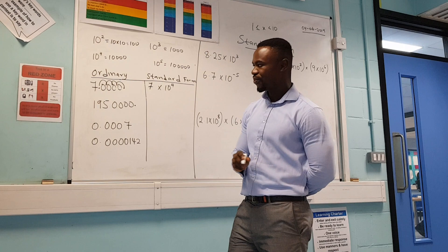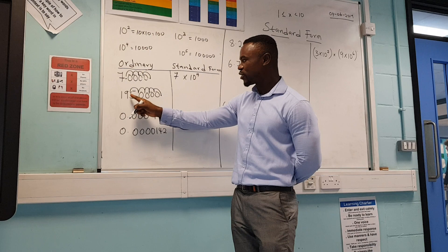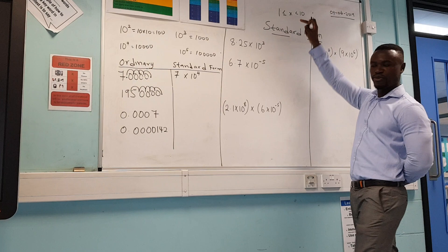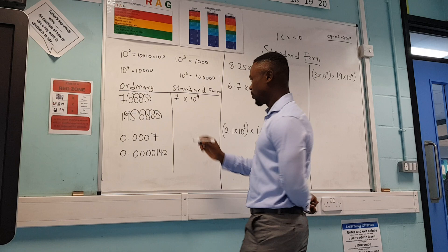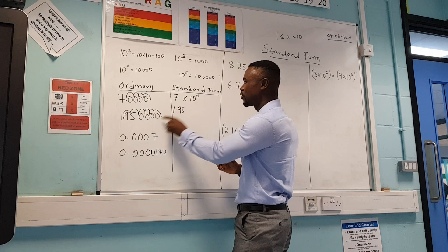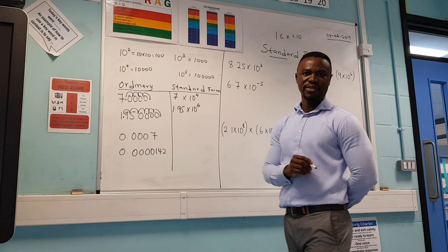For the next example, pretend there's a decimal point at the end. I move one, two, three, four, five — but I can't stop there because that number is 19, which is bigger than what standard form allows. So I keep moving: one more place gives me 1, which is in my standard form range. So I write this as 1.95 times 10 to the power of 6, because I moved six places total.